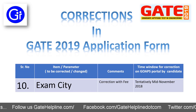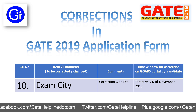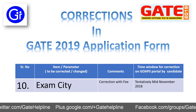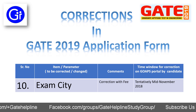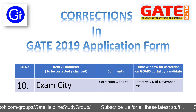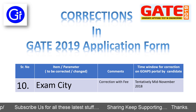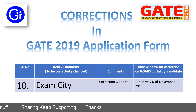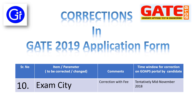The 10th parameter to be corrected or changed is examination city. Many students have selected the wrong examination city or want to change their examination city due to personal reasons. This can be done by paying some amount of extra fee. The time window for correction on the GOPS portal to select another examination city will tentatively open in mid-November 2018, so you need to wait a bit more for this one.